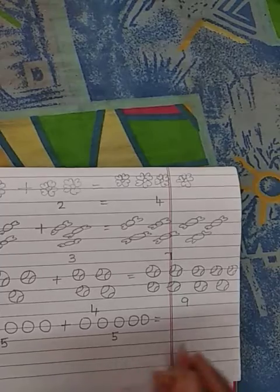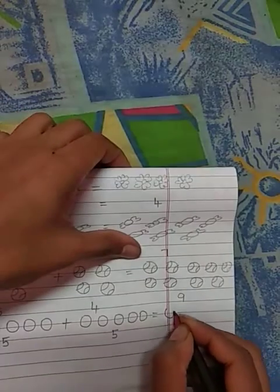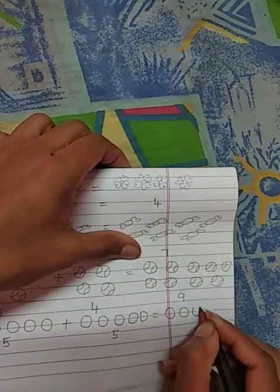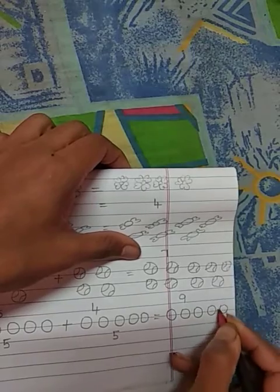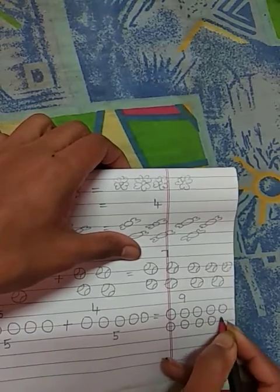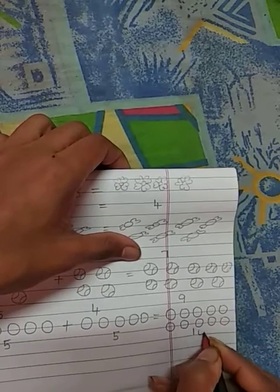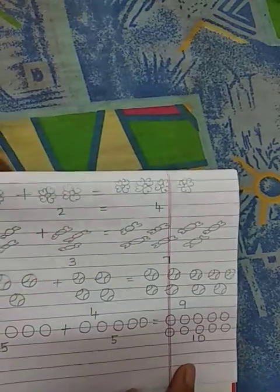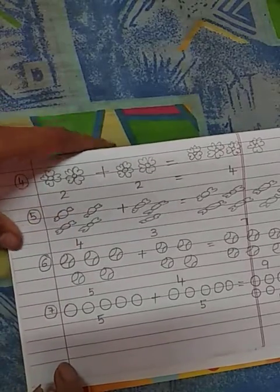So it will be 5 plus 5, it will be 10 circles. Let's count. 1, 2, 3, 4, 5, 6, 7, 8, 9, 10. So how many circles children? There are 10 circles.